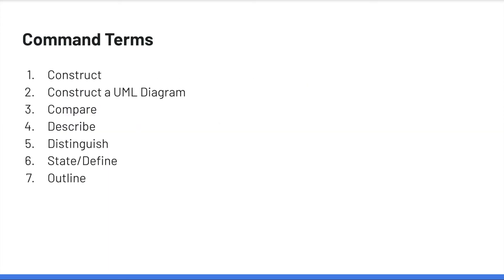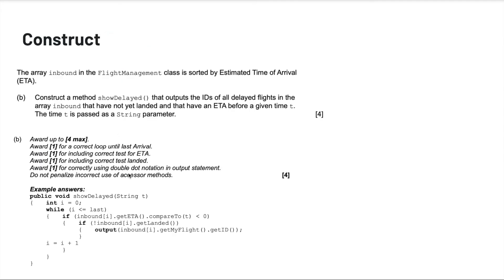Now let's do a quick run through of some command terms. The first is construct. For example: construct the method showDelayed that outputs the IDs of all delayed flights in the array inbound that have not yet landed, that have an ETA before the given time t — the time t is passed as a string parameter. These questions are straightforward in the sense that you just need to write code to meet the specification. Break it down into what you have — the array inbound and time t — and what you want: a method that outputs IDs based on that information.